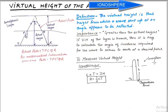To measure virtual height, we use equipment known as an ionosonde. This will send the signal vertically into the ionosphere and it will come back after reflection from the ionosphere. The observation point is kept very close to the transmitting signal.